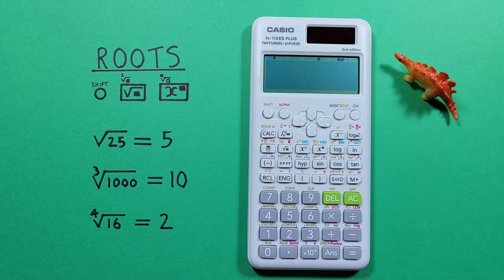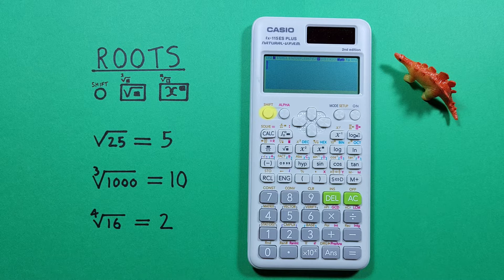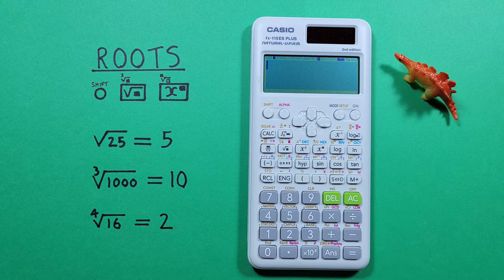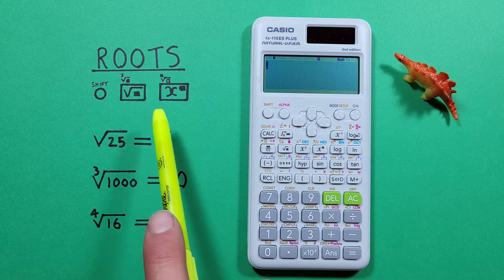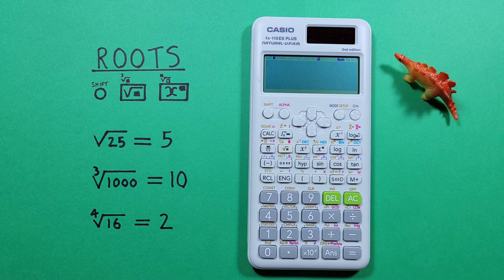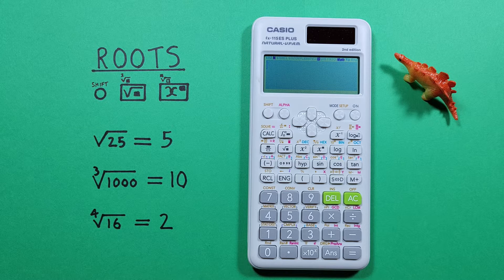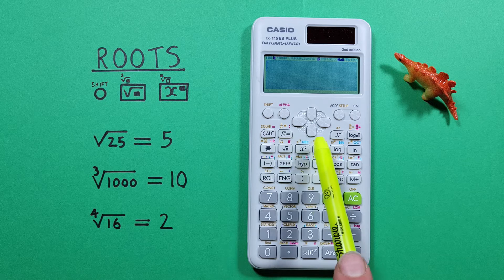To do that, we'll use the shift key located here, the square root key with the shift function of cube root located here, and the exponent key with the shift function of nth root located here.